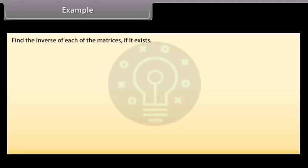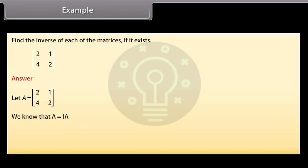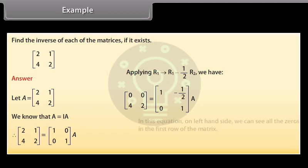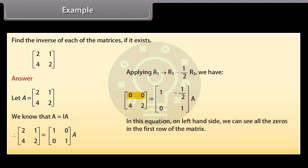Example: Find the inverse of the given matrix, row-wise: first row [2, 1], second row [4, 2]. Let the given matrix be A. Applying R1 changes to R1 minus (1/2) R2, we get the first row as [0, 0]. In this equation, on the left-hand side, we can see all zeros in the first row. Therefore, A inverse does not exist.